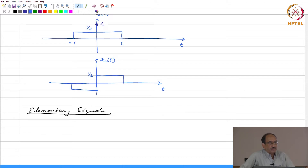The discrete time impulse is the most elementary of all signals — it is the simplest discrete time signal you can think of. What we are going to do now is compare each elementary signal with its continuous time counterpart. The discrete time sequence is the simplest one, but its continuous time counterpart is really complicated. We will come to that after we introduce the unit step sequence.